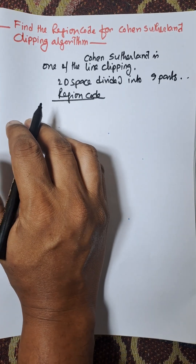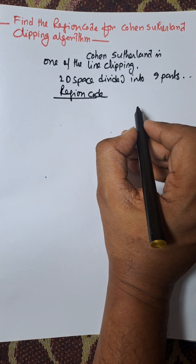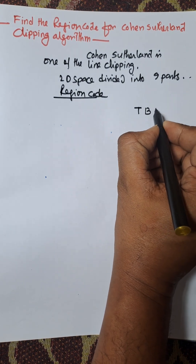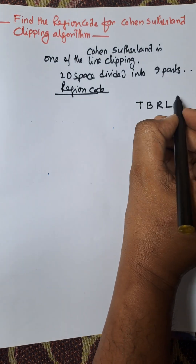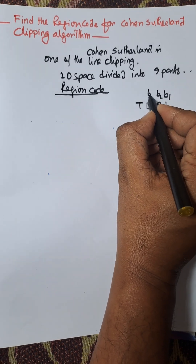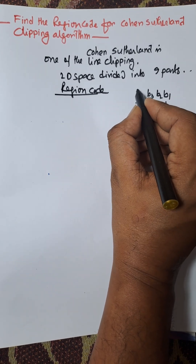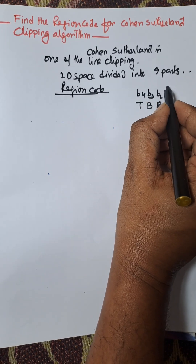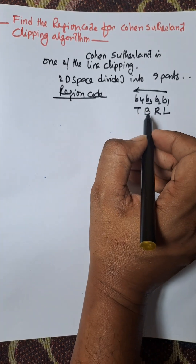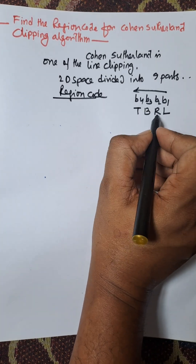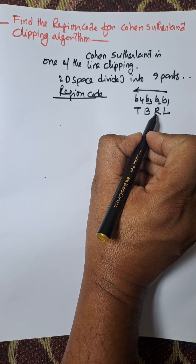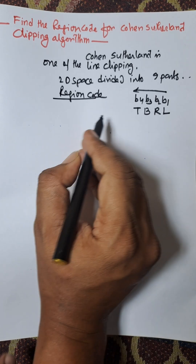This region code can be divided based on the code TBRL. So this is the first bit, this one is the second bit, this is the third bit, and this one is the fourth bit, from left to right. This is TBRL — we need to remember: T for top, B for bottom, R for right, L for left.